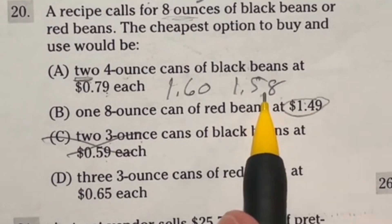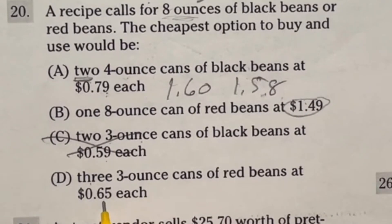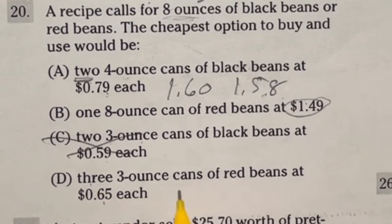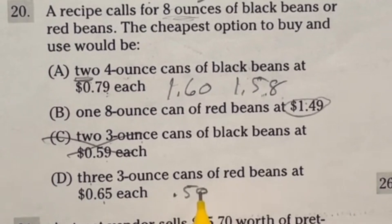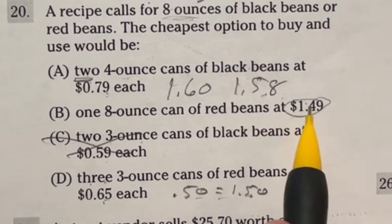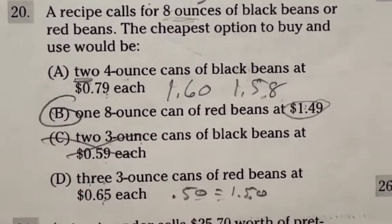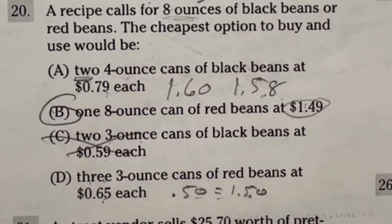Down here, we have 3 of them that are 65 cents each. Well, I can tell you right now, if I had 50 cents each for 3 of them, that would be a dollar 50. So that means 65 is higher than that, meaning it again cannot be lower than B. So it looks like our best option here is going to be B, one 8-ounce can of red beans at $1.49.